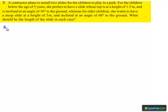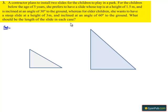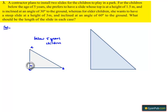Moving on to the solution. Let us consider two slides as shown in the figure. For the children below 5 years, let AB represent the slide and C be the point where we draw a perpendicular. For the elder children, let A'B' represent the slide and A'C' represent the vertical height, as shown in the figure.